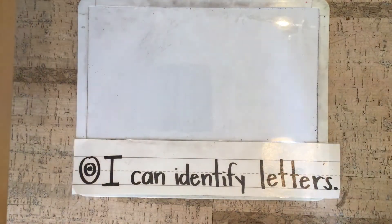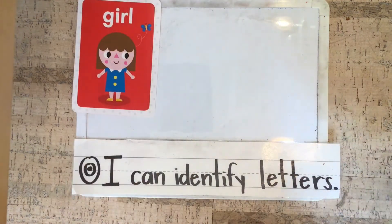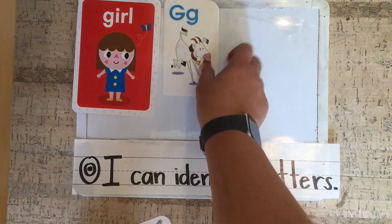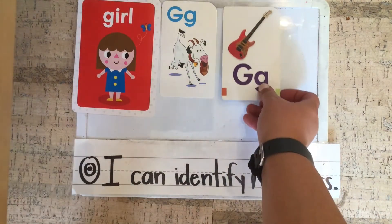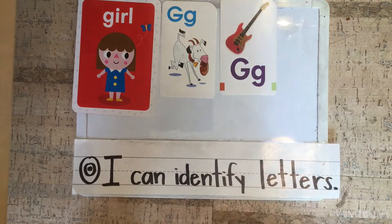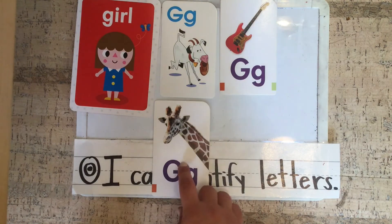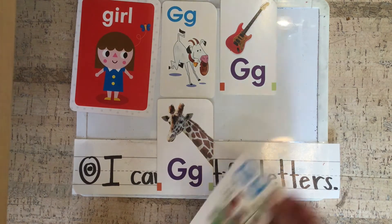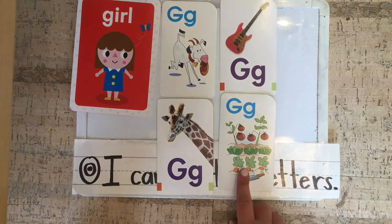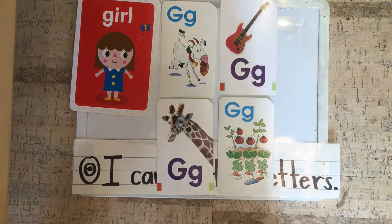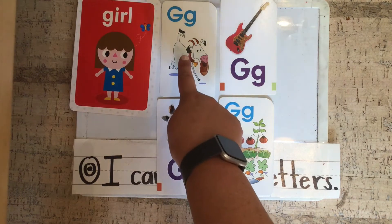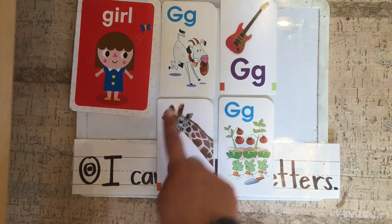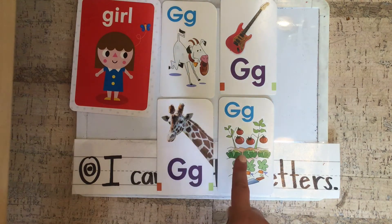Let's look at some other words that start with G. We have girl. G is for goat. G is for guitar. G is for giraffe. And G is for garden. Say these words with me: girl, goat, guitar, giraffe, garden.